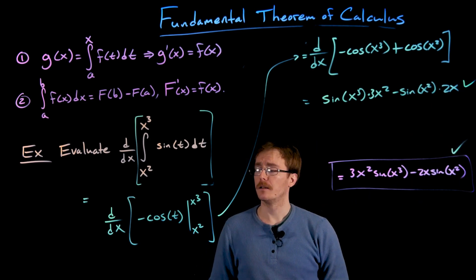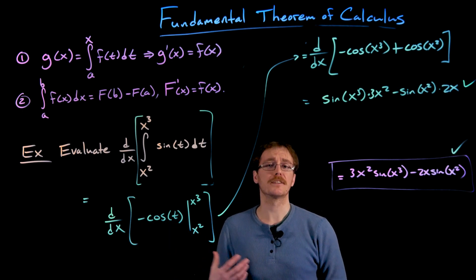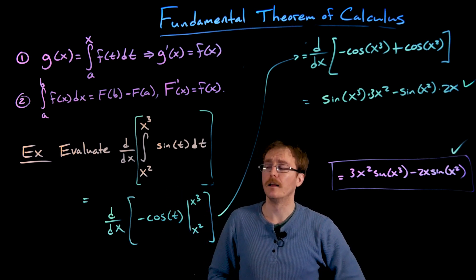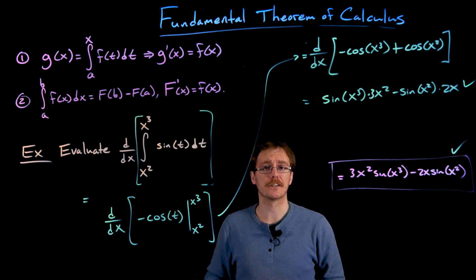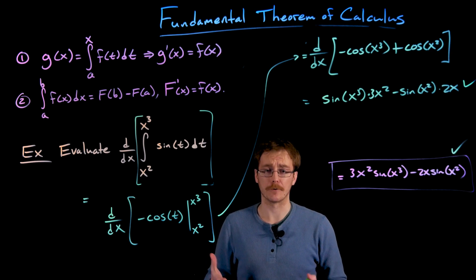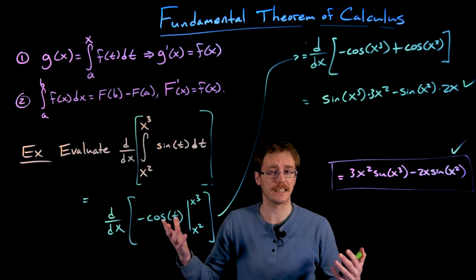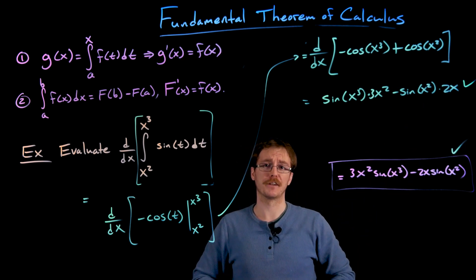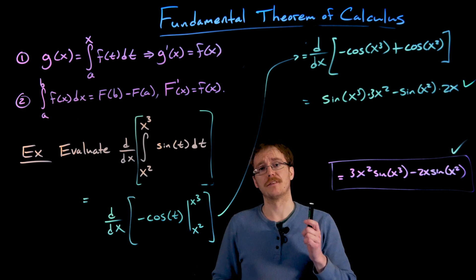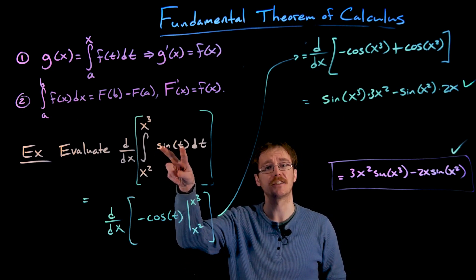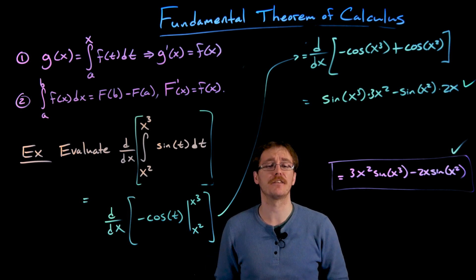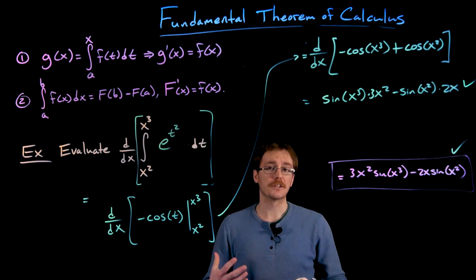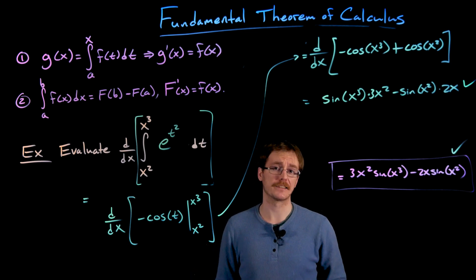We get the same answer either way. The second approach is more straightforward, but it's not usually considered the proper way to solve a problem like this — and here is the reason why. It assumes that there actually exists an antiderivative function that we can find or write down. In this problem our integrand is sine, and we happen to know the antiderivative of that function. However, the integrand could be something much more complicated that would be very tedious to find the antiderivative of, or it could be a function that does not have an antiderivative at all.